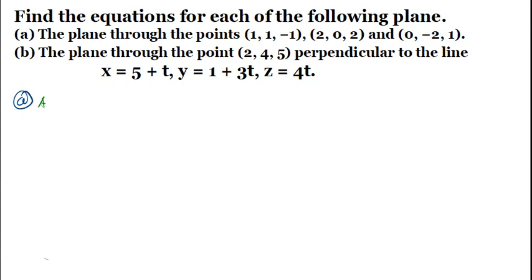For question A, we have been given three points. Let me name them: point A is (1, 1, -1), point B is (2, 0, 2), and point C is (0, -2, 1). These three points are points on the plane — we are told the plane passes through those points — and we are looking for the equation of that plane. To get the equation of the plane, we just need a point and a normal vector. We are at liberty to choose any of the three points.